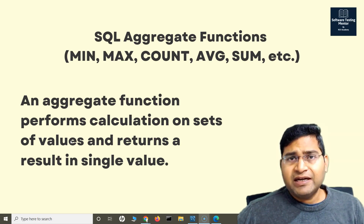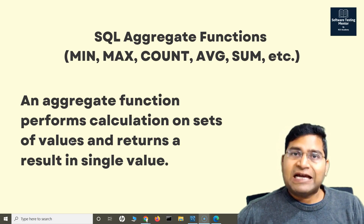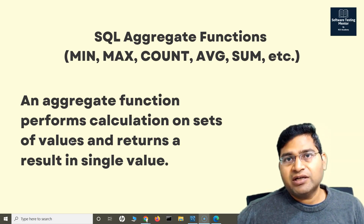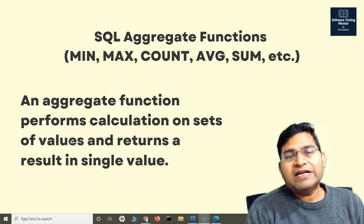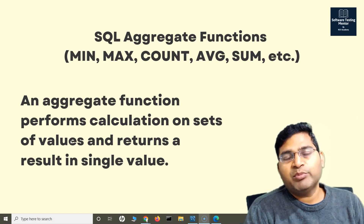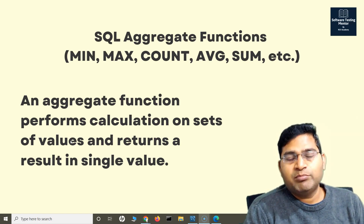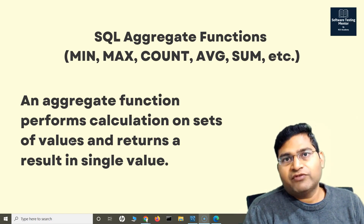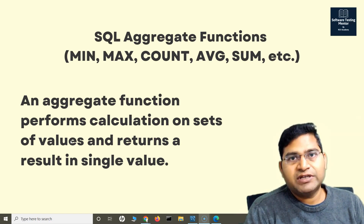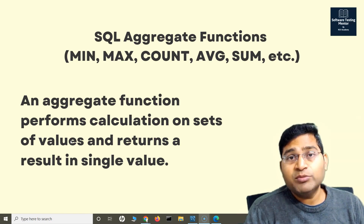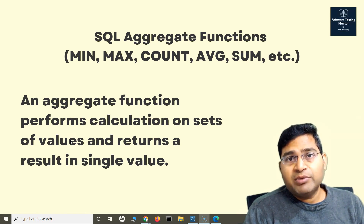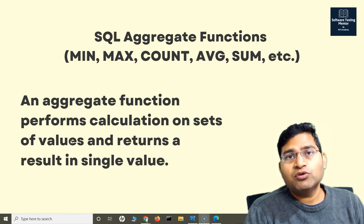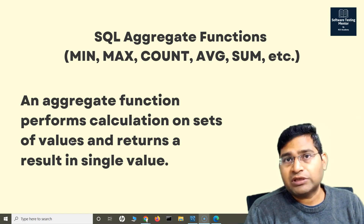So what are aggregate functions in SQL? Aggregate functions perform calculation on sets of values and return a single value. For example, if I want to find the minimum of a set of numbers, I can use the aggregate function MIN to find the minimum in a particular column of the table. If I want to find the maximum, I can use MAX. If I want to count how many rows are in a table or count non-null values in a column, I can use COUNT.